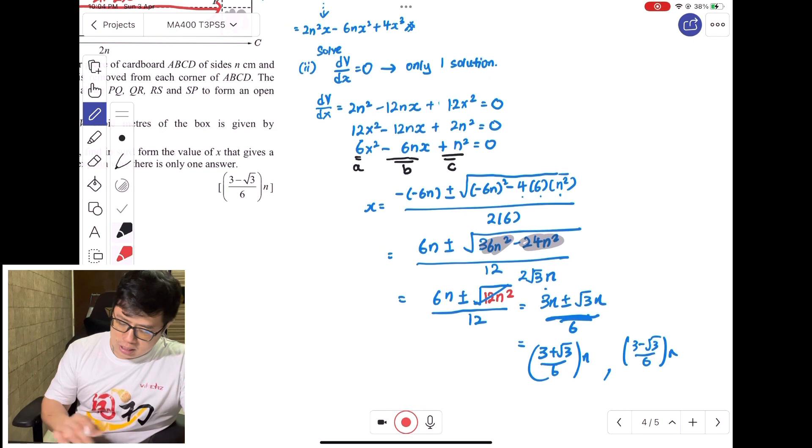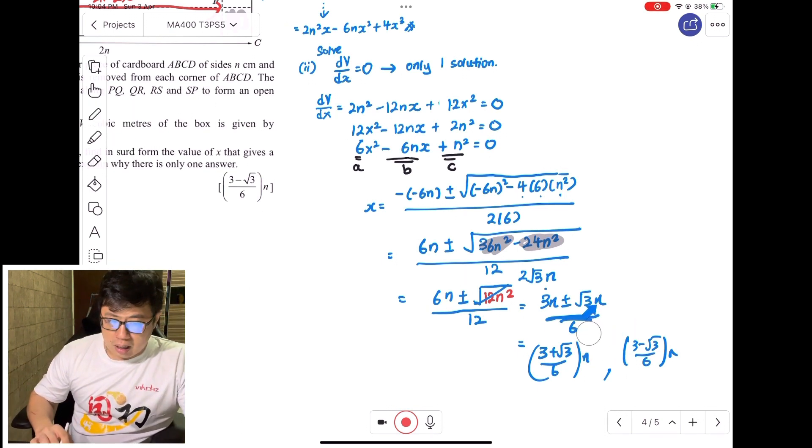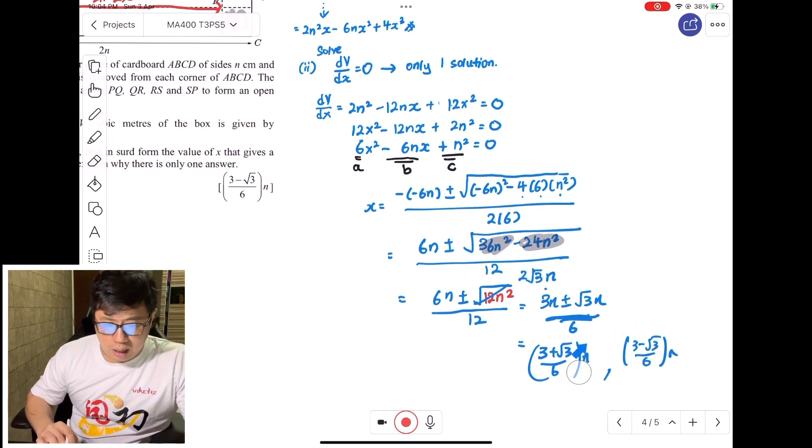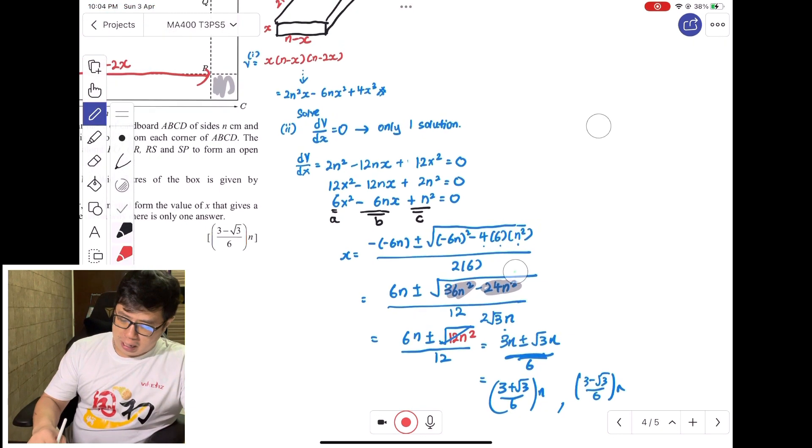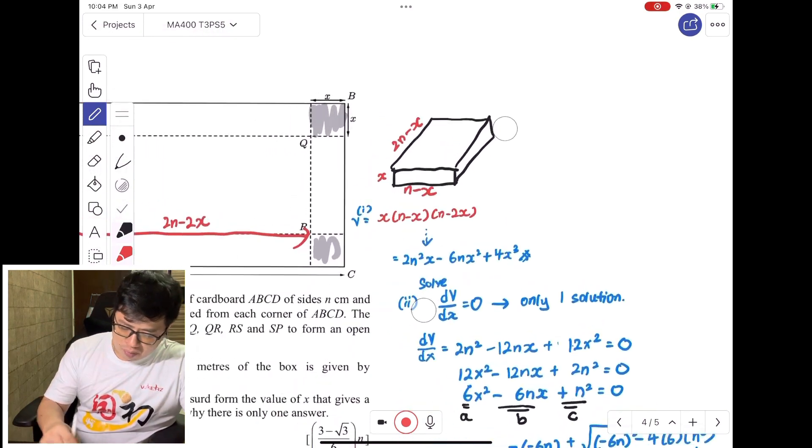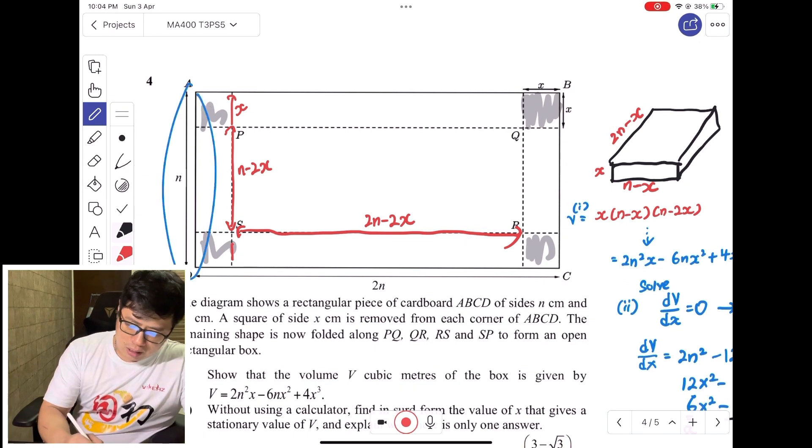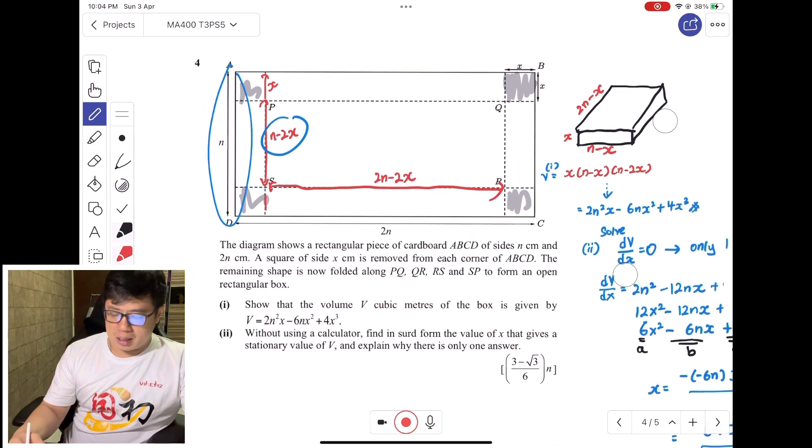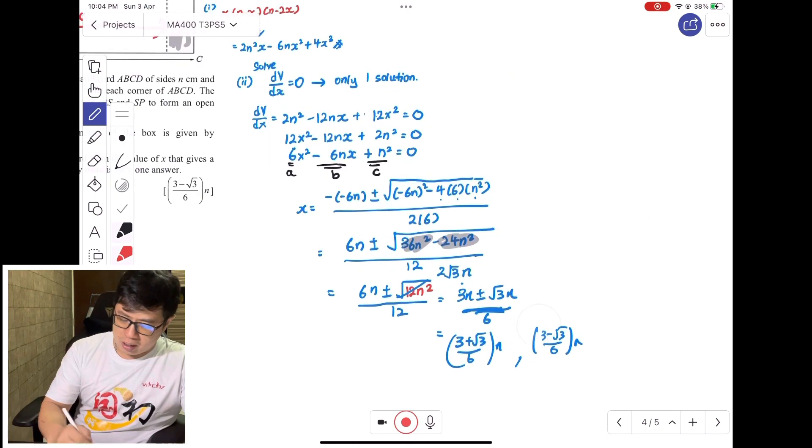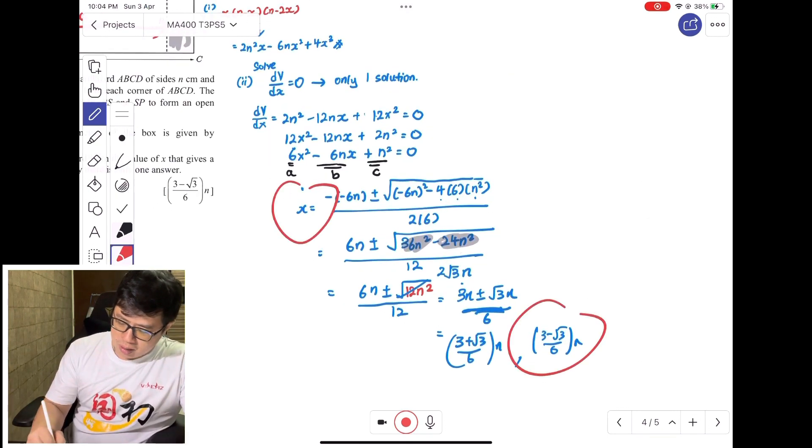However, you do need to know that if you look at this dimension, you can see N and this is N minus 2X. Your X cannot be too big. If your X is too big, if you look at the dimension of the cardboard, it will tell you that N - 2X has to be more than zero, meaning X has to be less than N/2.